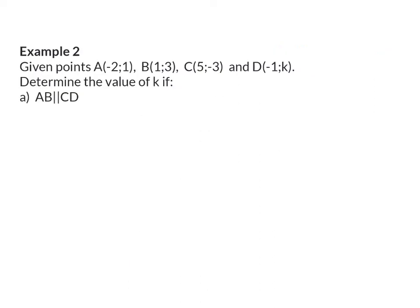Example 2. Given points A(-2, 1), B(1, 3), C(5, -3) and D(-1, k). Determine the value of k if, for our first question, AB is parallel to CD. We already know that parallel lines have the same gradient. So here we can focus on the gradient of AB, and that should be equal to the gradient of CD.